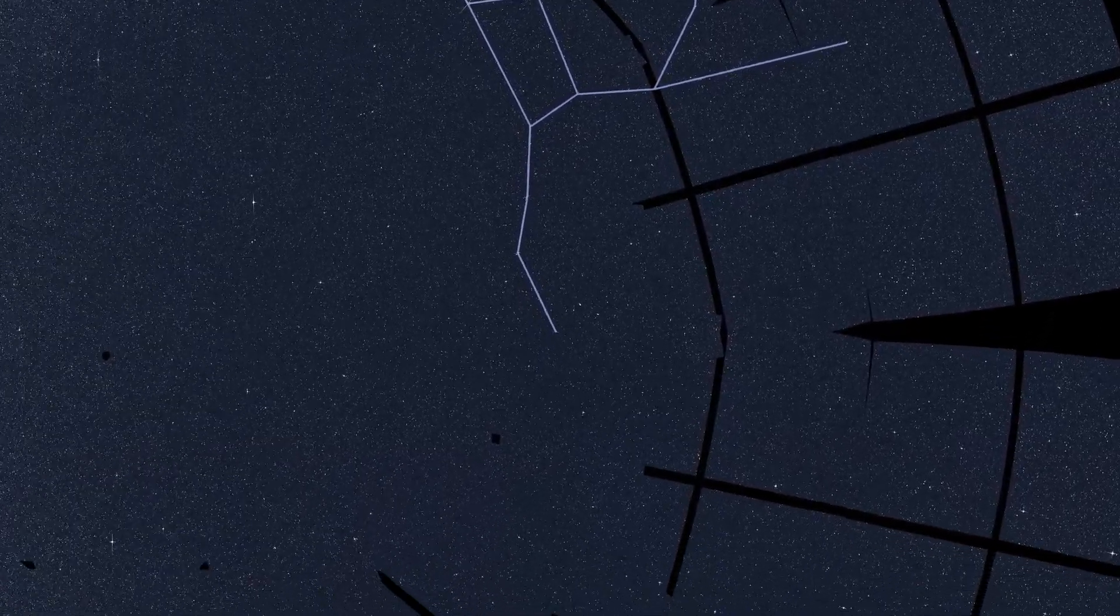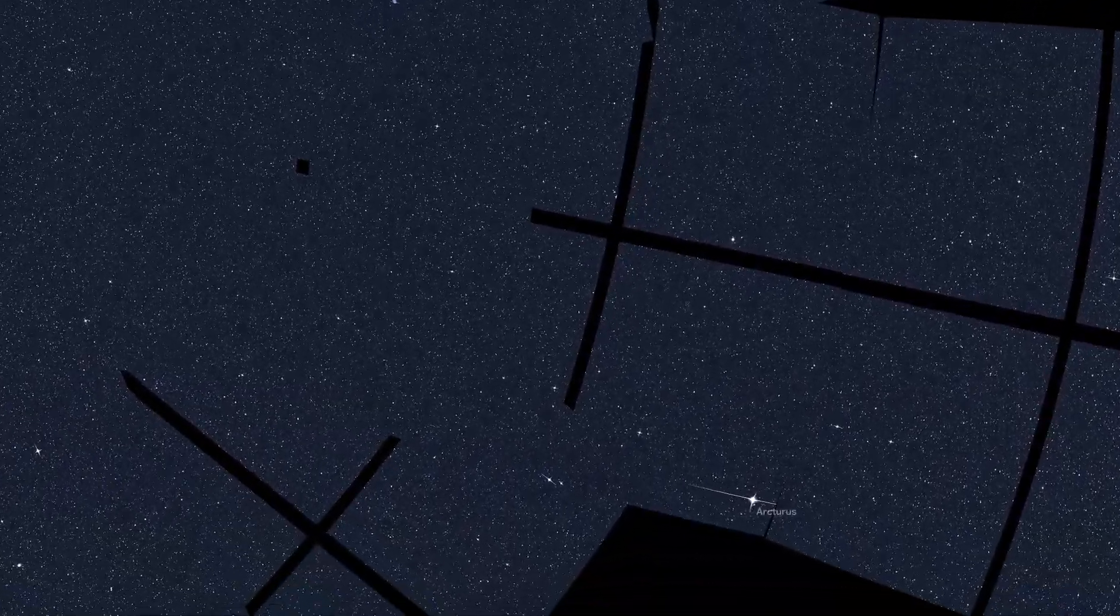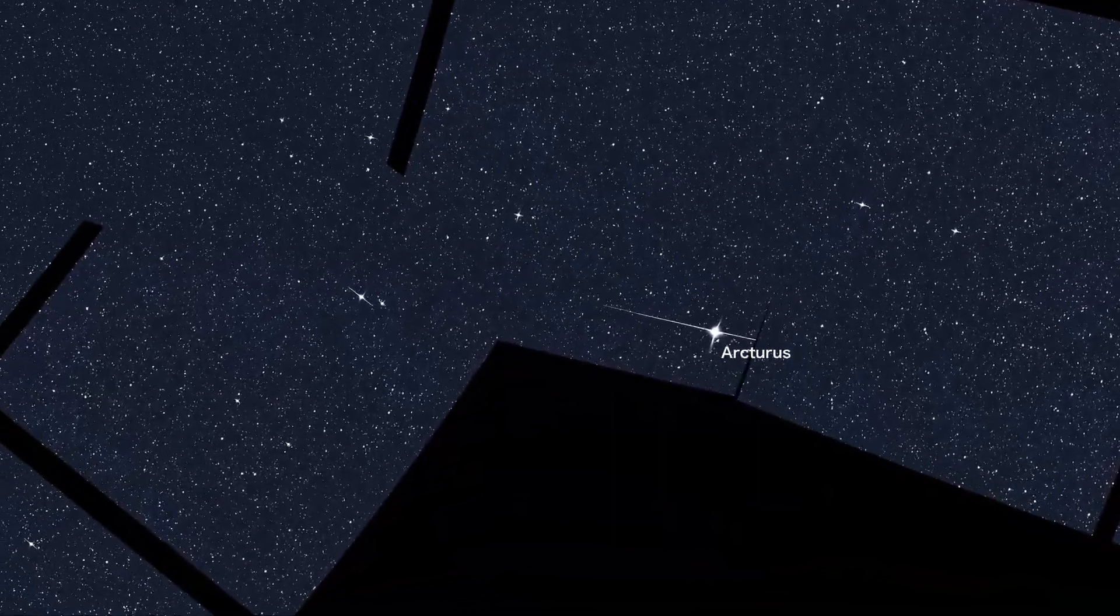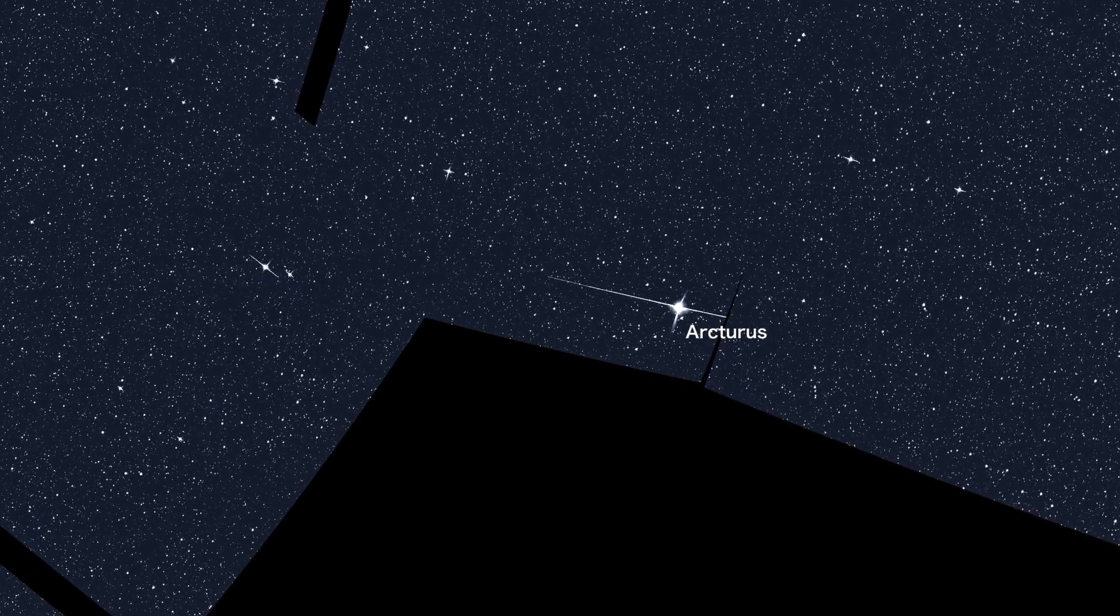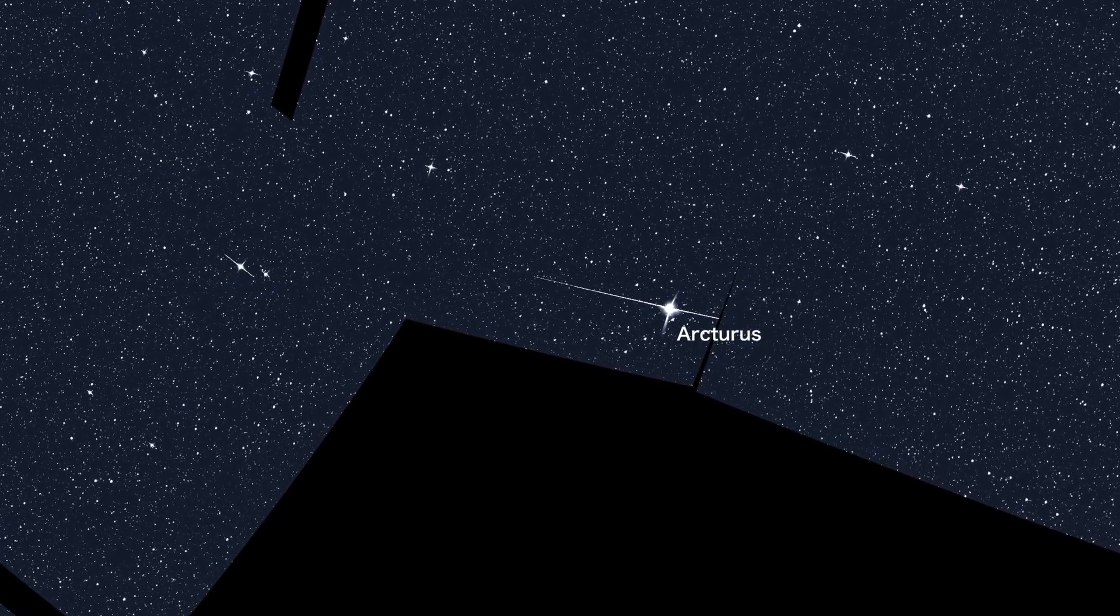Following the arc of the Big Dipper's handle leads to another prominent star, Arcturus. Located about 37 light-years away in the constellation Boötes, Arcturus is the fourth brightest star in the night sky.